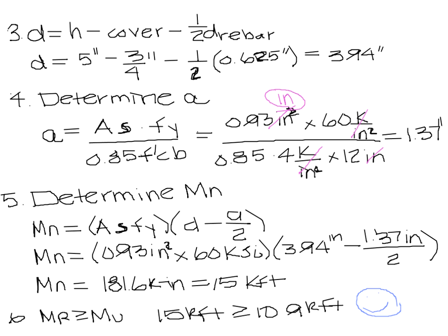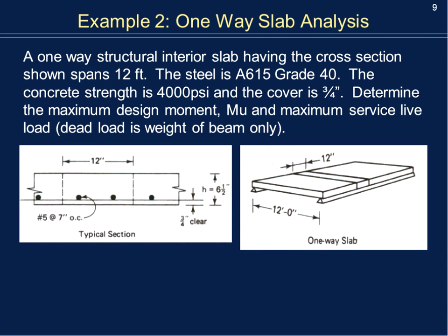Now let's do one more problem. In this example, we have a one-way structural interior slab with a span of 12 feet. The steel is grade 40, concrete strength is 4,000 psi, and cover is three-quarters inch interior. We're asked to determine the maximum design moment M sub U and the maximum service live load that could be applied, assuming dead load is only the self-weight of the slab. Since we're finding M sub U, we'll work the steps in reverse.